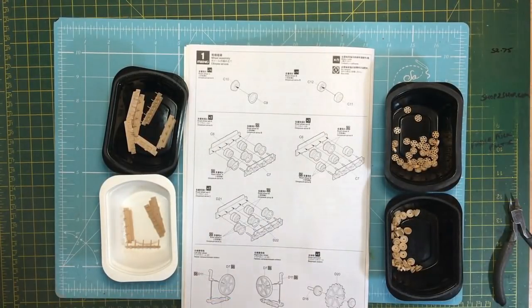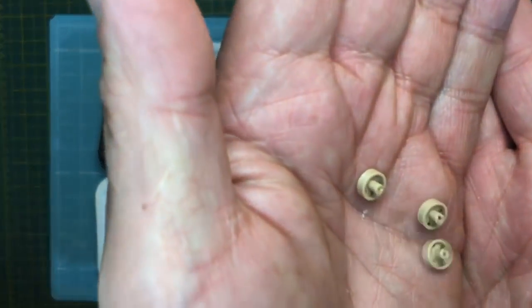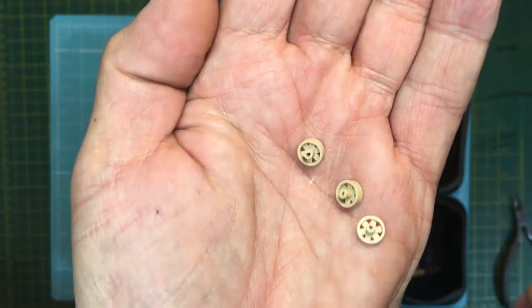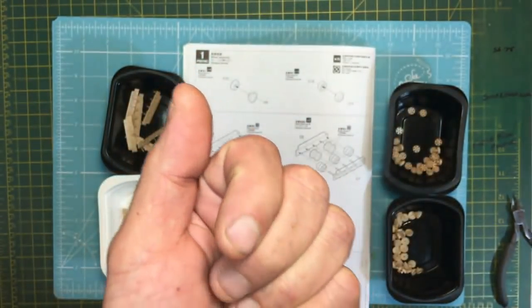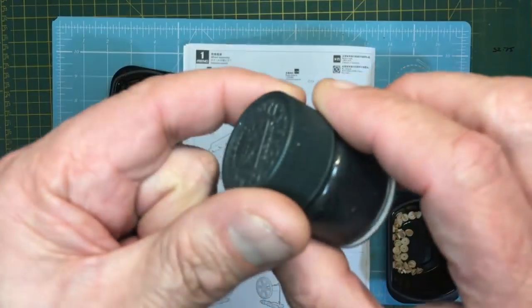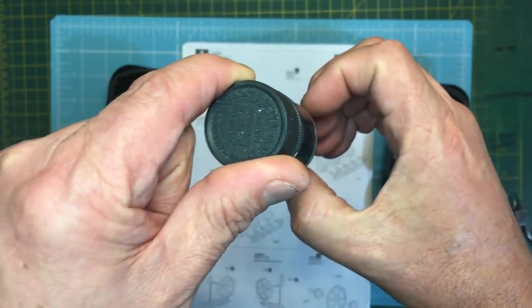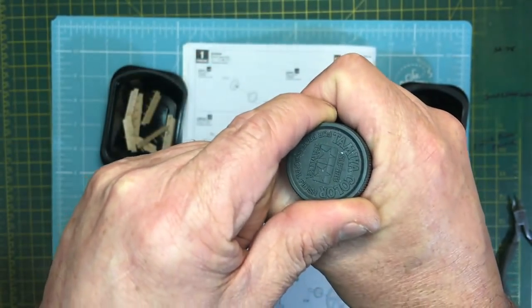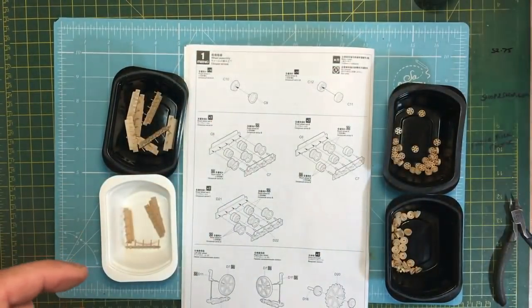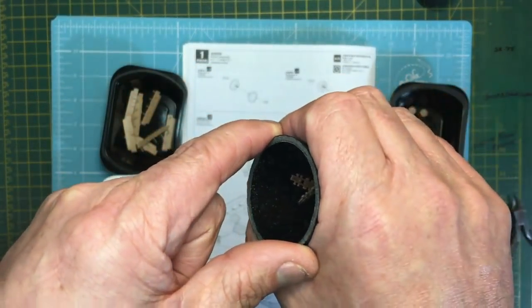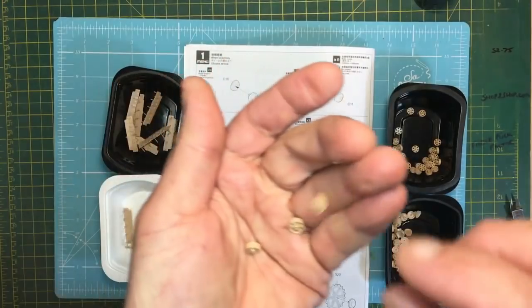The wheels are all cleaned up off their sprues, but I've noticed—I don't know if you can see it in this shot—they've actually got a draft on them due to molding restrictions. A draft is, if you imagine trying to mold something cylindrical like this bottle, if it was parallel all the way down it wouldn't want to come out of the mold. So you either have a split mold, which gives you a seam line, which they don't want on these wheels, or you put a draft—a taper so it comes out easily.